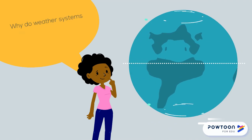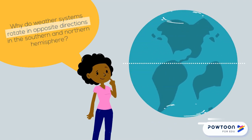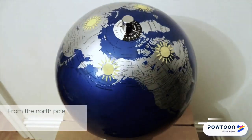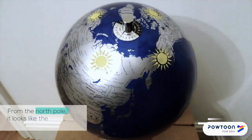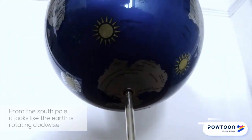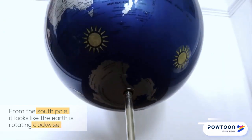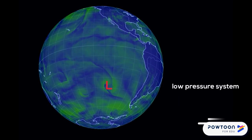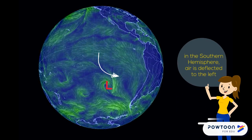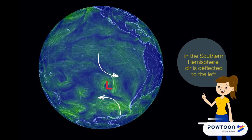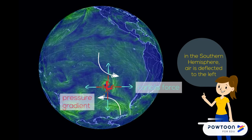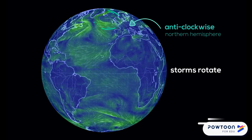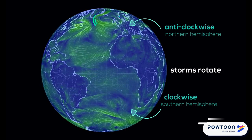So why do weather systems rotate in opposite directions in the southern and northern hemispheres? Imagine looking at the rotating earth from space. If you look down at a dot on the surface of the earth from the north pole, it looks like it is rotating anti-clockwise. If you look down from the south pole, it's rotating clockwise. Think of a low pressure area in the southern hemisphere. Air coming into it from the north is deflected to the left, to the east. Air coming in from the south is deflected to the west. You get clockwise spinning where they meet. That is why storms rotate in an anti-clockwise direction in the northern hemisphere, but rotate clockwise in the southern hemisphere.